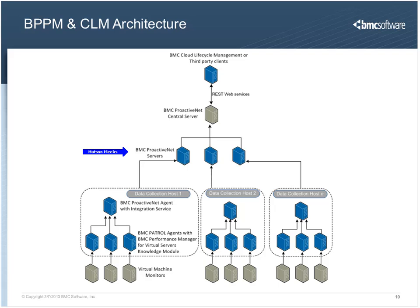The data collection host is basically a BPPM integration server with the integration service, the ProactivNet agent running on it — we would also recommend having a patrol agent there. It may have additional patrol agents for collecting data directly from vCenter. This is limited monitoring out of the box. It doesn't have to remain limited, but out of the box the data collection host has the vSphere KM running on an agent with the ability to connect to vCenter. By default, we collect something like seven metrics out of the box.